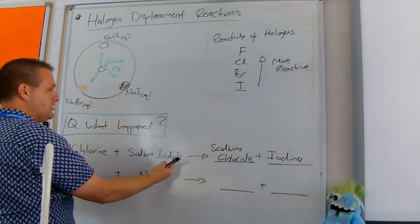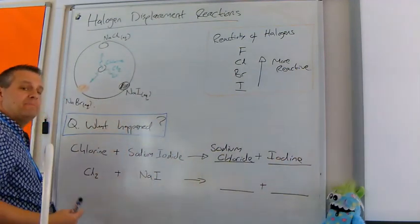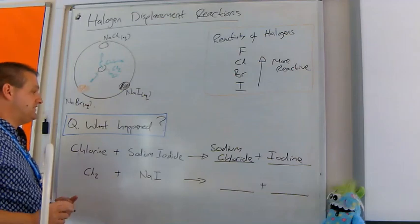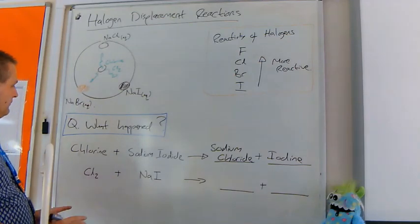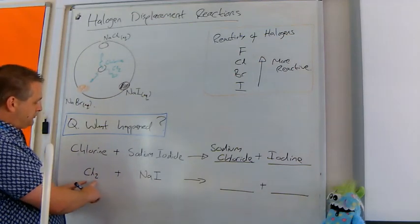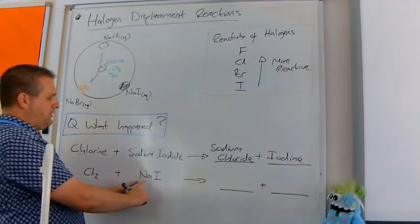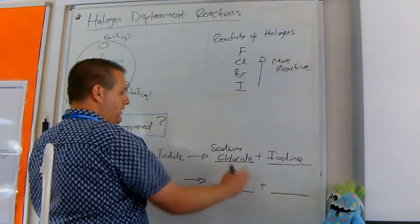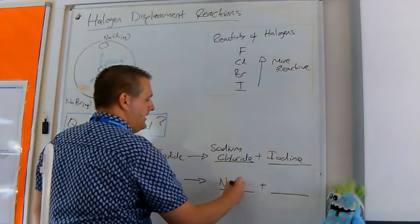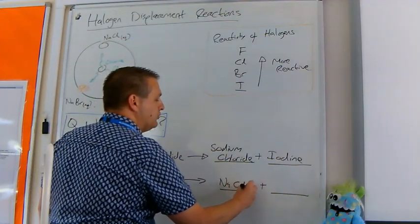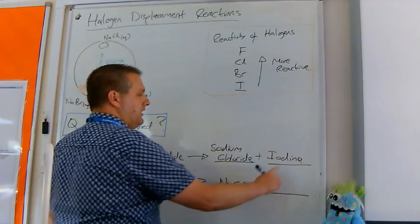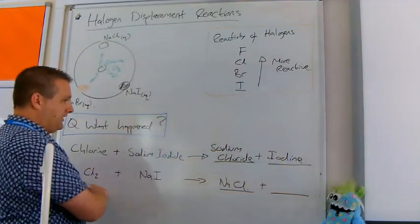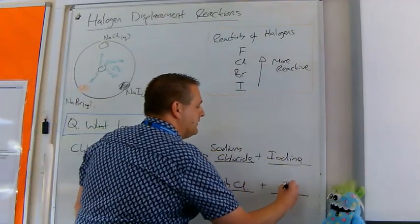They've literally just switched over. That's all that's happened in the displacement reactions. They're actually very simple. If we look at that as a chemical simple formula, chlorine is Cl2, they go around in pairs. Sodium iodide is NaI. Sodium chloride is going to be Na stuck to just one single chlorine, so NaCl. And iodine, a bit like chlorine, likes to go around in pairs, so you get I2.